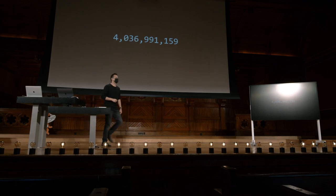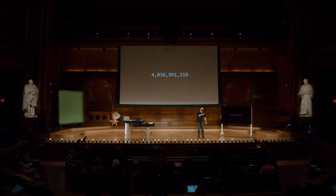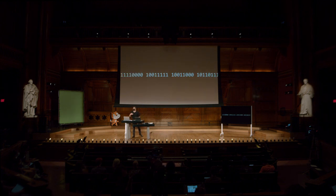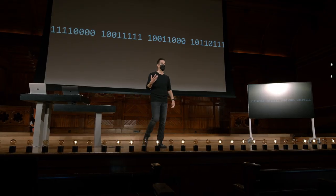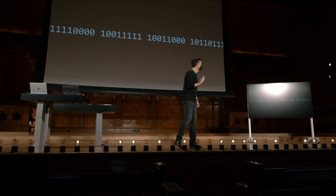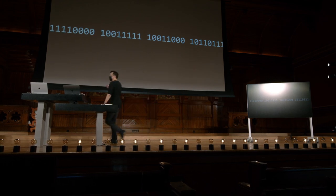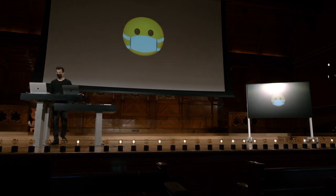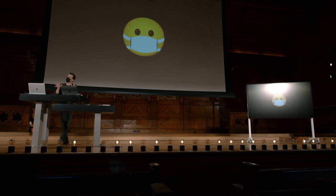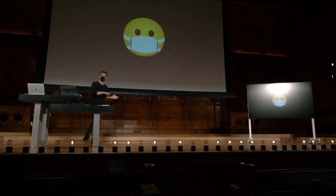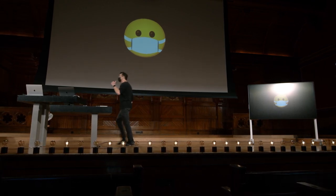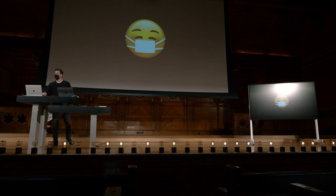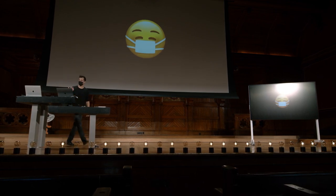Então, apenas como curiosidade, alguém já recebeu este número decimal? Ou, se você preferir binário agora, alguém já recebeu este padrão de zeros e uns em seu telefone? Em um texto ou em um e-mail, talvez no ano passado? Bem, se você realmente procurar isso, essa sequência esotérica de zeros e uns representa o rosto com máscara. E observe que, se você tiver um iPhone ou um dispositivo Android, poderá estar vendo coisas diferentes. Esta é a versão Android mais recente, e esta é a versão iOS mais recente.